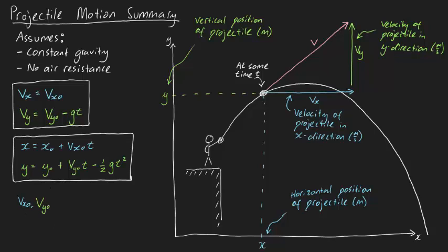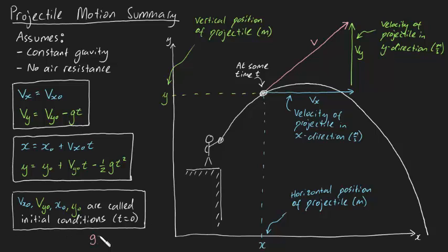vx0, vy0, x0 and y0 are called initial conditions and are the velocities and positions when t is equal to zero. g is equal to 9.81 meters per second squared.